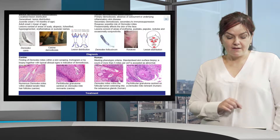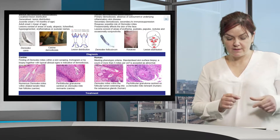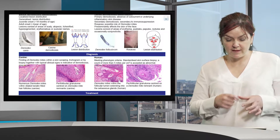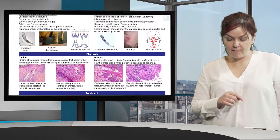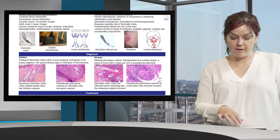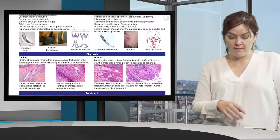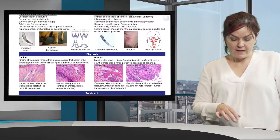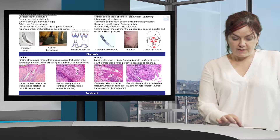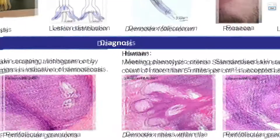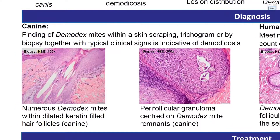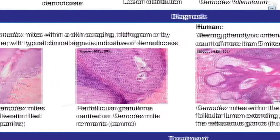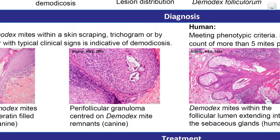Diagnosis of canine demodexosis is either by skin scraping — where we squeeze the skin and gently scrape with a scalpel blade and then assess the material on a slide — or we can do a trichogram or a biopsy. The biopsy would only be taken if the skin scraping and trichogram are negative. The first picture shows the hair follicle, where we can see hyperplasia of the epidermis and dilated hair follicles containing demodex mites.